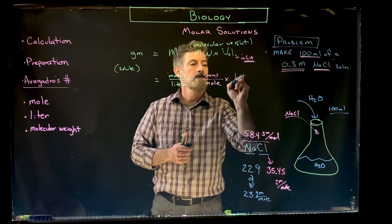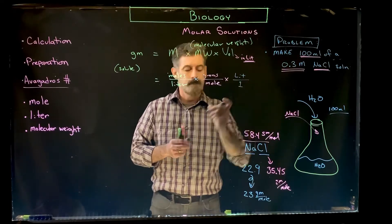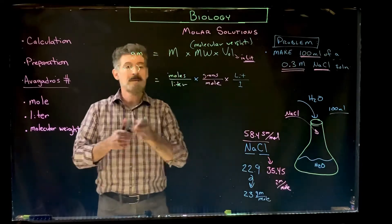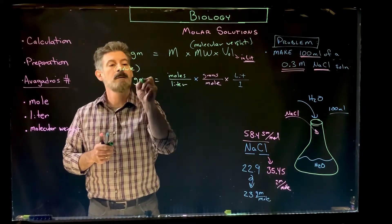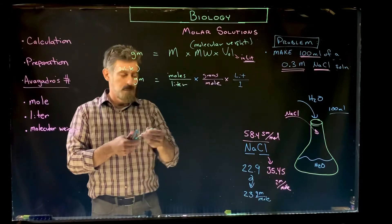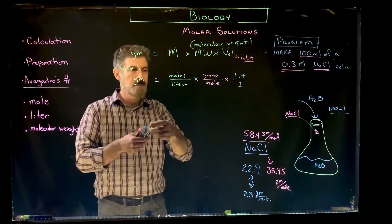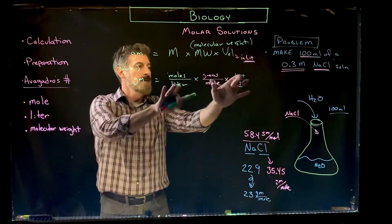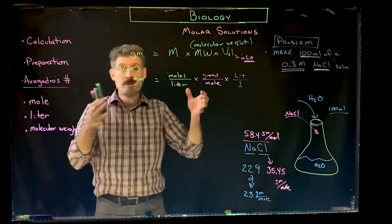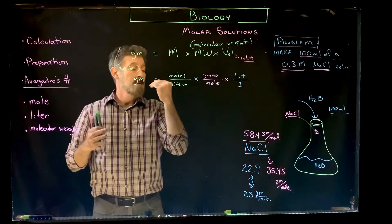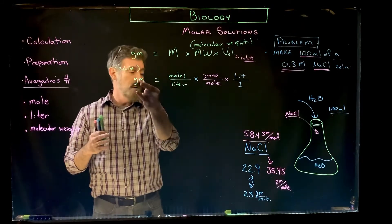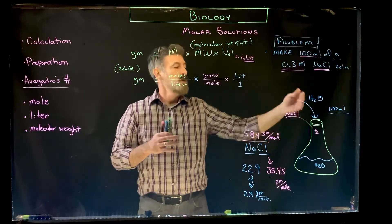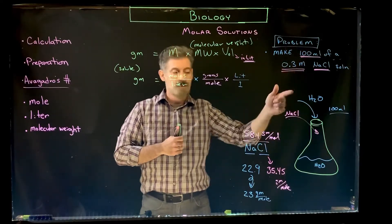What this means is that if you were to solve this out, you would see as you multiply across that the moles would cancel out and the liters would cancel out, and your answer would be in the units of grams. So the question would be, how many grams sodium chloride do we need to make this 0.3 molar solution?